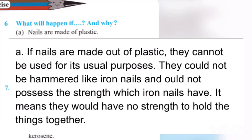Question number six: What will happen if, and why? First: Nails are made of plastic. If nails are made out of plastic, they cannot be used for their usual purposes. They could not be hammered like iron nails and could not possess the strength which iron nails have. It means they would have no strength to hold things together.